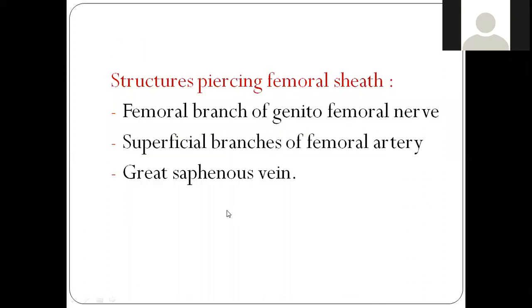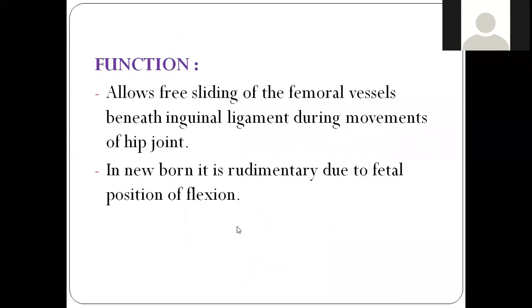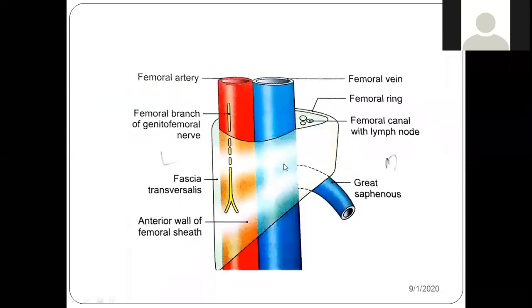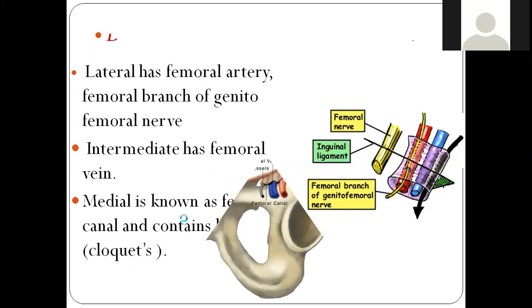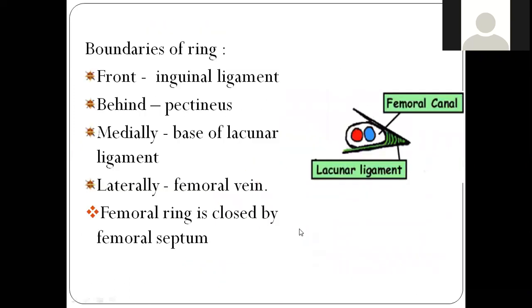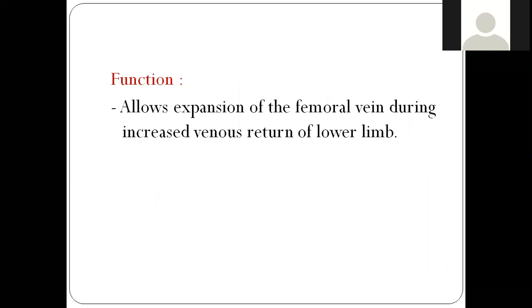Just to summarize for a late-joining student: the femoral sheath has three compartments — medial, intermediate, and lateral. The medial-most compartment is the femoral canal, guarded by the femoral ring. The medial compartment contains a lymph node, the intermediate compartment contains the femoral vein, the lateral compartment contains the femoral artery, also pierced by the femoral branch of the genitofemoral nerve. Anterior wall is fascia transversalis, posterior wall is fascia iliaca. The canal allows expansion of veins during increased venous return.